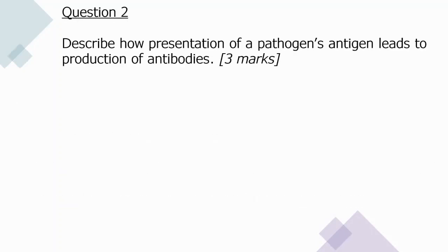Question two: describe how presentation of a pathogen's antigen leads to production of antibodies (three marks). A helper T cell binds to the antigen on the antigen-presenting cell, then stimulates the specific B cell. This stimulation causes B cells to divide by mitosis — a helper T cell stimulates the B cell to undergo clonal selection. The B cell clones differentiate into plasma cells, and it is these plasma cells which release antibodies.